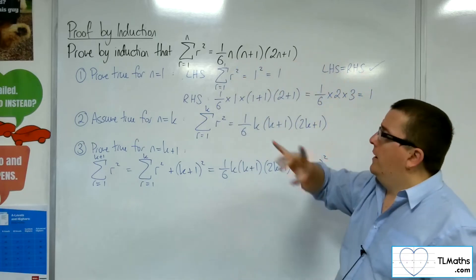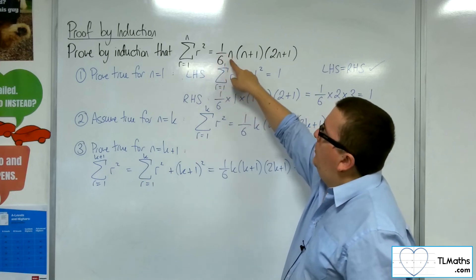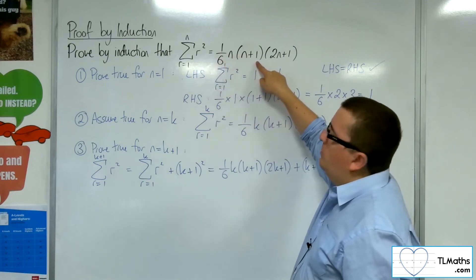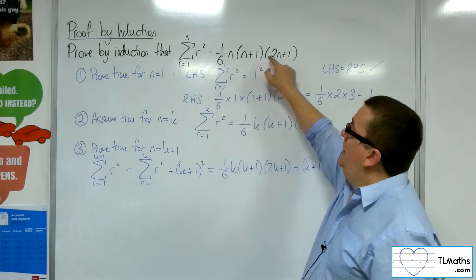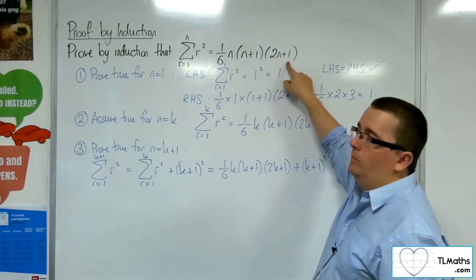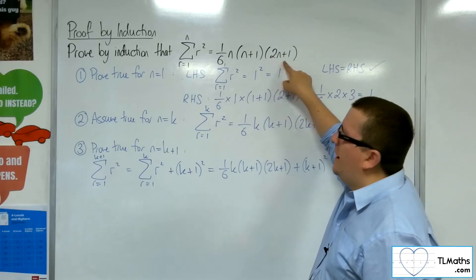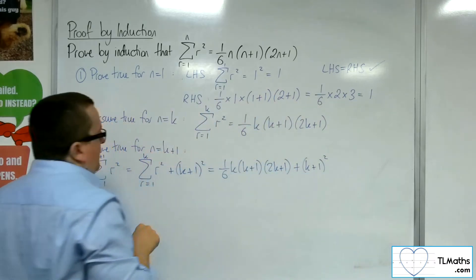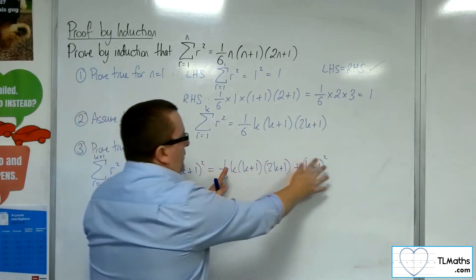What I want to target and get is 1/6 k plus 1, k plus 1 plus 1, so k plus 2, and then two lots of k plus 1 plus 1. So, that would be 2k plus 3. That's what I want to arrive at. So, I want to factorize this.